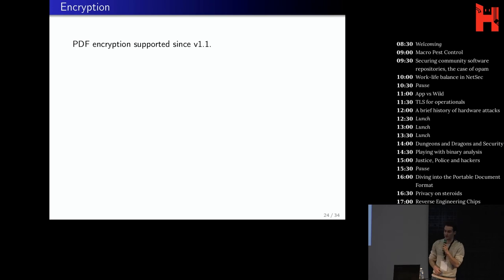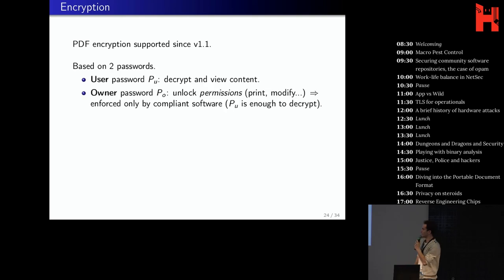Okay, so now I will talk about PDF encryption. So who here has ever used an encrypted PDF or encrypted a PDF themselves? One, two, three. So a few of you. So how does it work? It's supported since version 1.1, so quite early, and it's based on two passwords. So you have a user password that allows you to decrypt and view the content, and then an owner password that allows to unlock permissions to print the document, to modify the document, et cetera. Of course, it's only enforced by compliant software, because the user password is already enough to decrypt the content. So if you have it, if you know it, you could already do whatever you want.